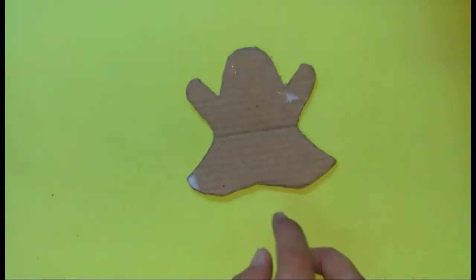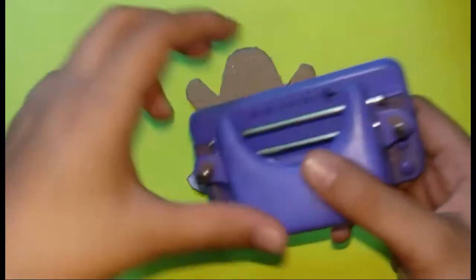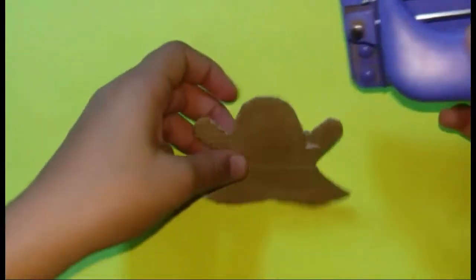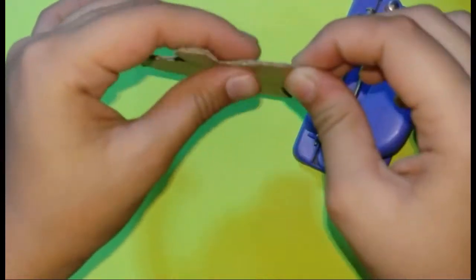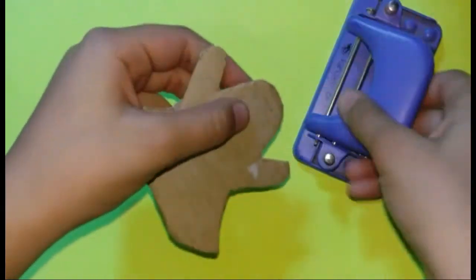This is how it should look like. Now, take a hole puncher and punch a hole at top so that you can attach your key ring later. If you think that your cardboard is too thick, then press it a bit so that you can easily punch a hole.